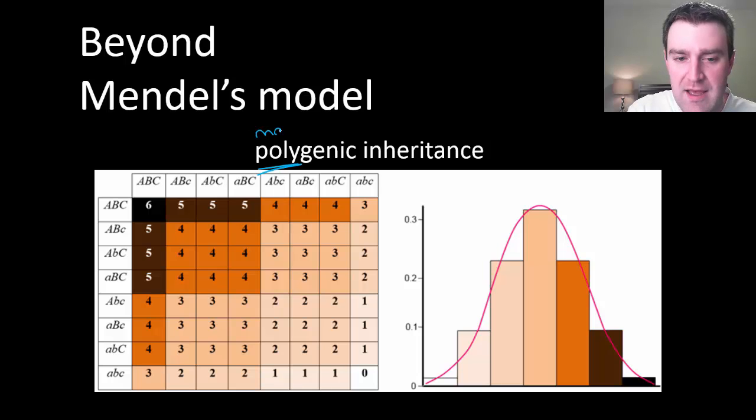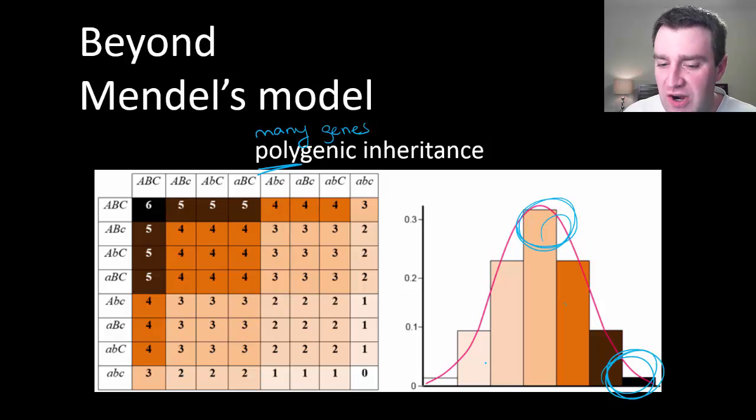Poly is a root word meaning many. So if there are many genes that contribute to something that we see, one basic example would be human skin tone. Lots of people have an intermediate skin tone and fewer of us have extremely dark or extremely light skin tones. That's the hallmark of a trait being polygenic. There are lots of ways that you might inherit various alleles if there are multiple genes all playing a role, and that leads to an intermediate skin tone.